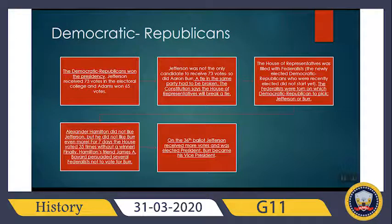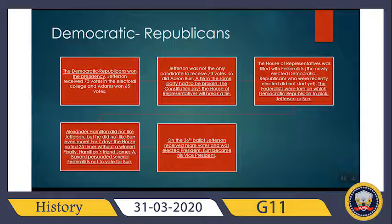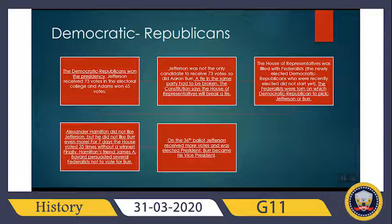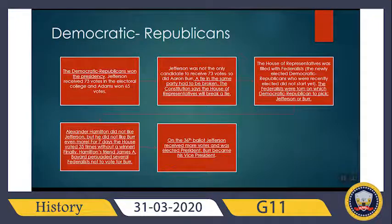The Constitution says the House of Representatives will break a tie. Back then, the House of Representatives was filled with Federalists — exactly the opposite party. The Federalists were torn on which Democratic Republican to pick, Jefferson or Burr. Here we see the main role of Alexander Hamilton. Alexander Hamilton hated Thomas Jefferson, but he did not like Burr even more. For seven days, the House voted 37 times without a winner. Finally, Hamilton's friend James A. Bayard persuaded several Federalists not to vote for Burr. On the 36th ballot, Jefferson received more votes and was elected president, and Burr became his vice president.